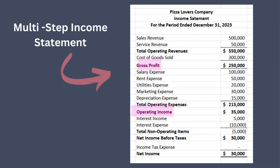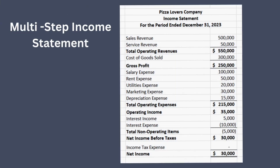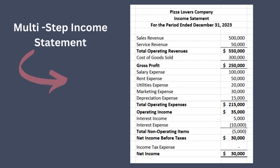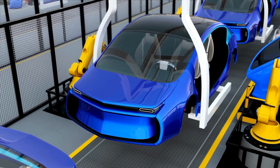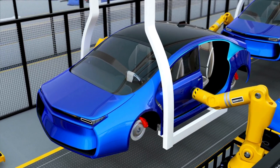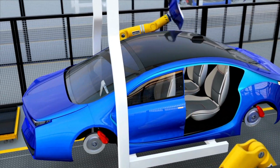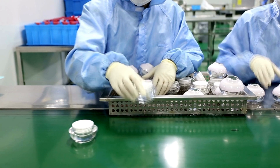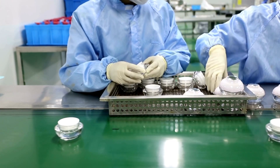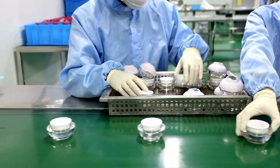The simplicity of the single-step income statement can limit its utility in more complex financial analysis. It does not provide detailed insights into various operational aspects such as gross profit, operating income, and non-operating items. In contrast, the multi-step income statement provides a more detailed view. It categorizes revenues and expenses into operating and non-operating sections and adds several intermediate subtotal measures of income, giving a clearer picture of a company's operational efficiency and profitability from core business activities.